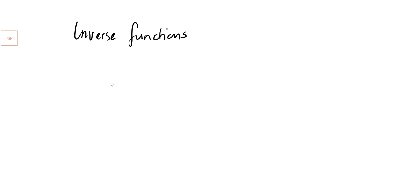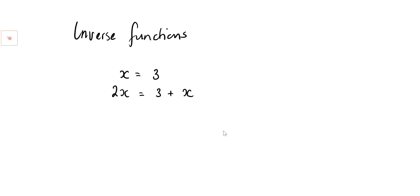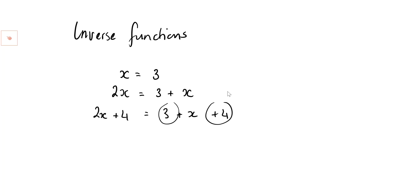If I start with x equals 3, what I've been asking you to do is build up a function by doing the same thing to both sides. For instance, if I double it I end up with 2x on one side and 6 on the other — or it could be 6, or three plus x. I'm going to choose that one. I could then add 4 to both sides, so I have 2x plus 4, and on this side it would be 3 plus x plus 4.